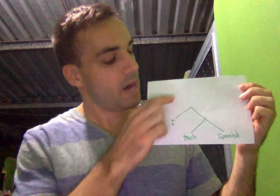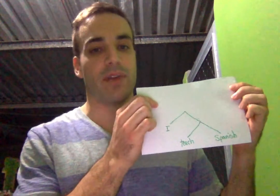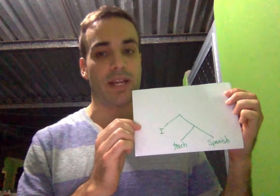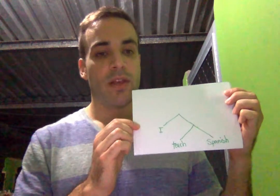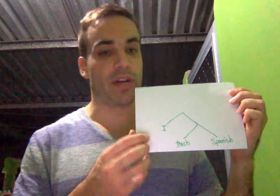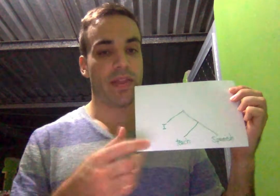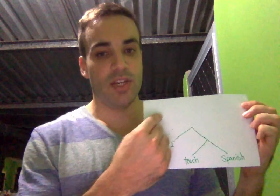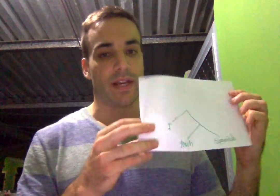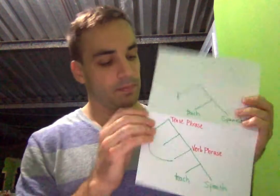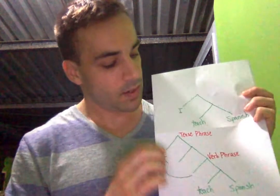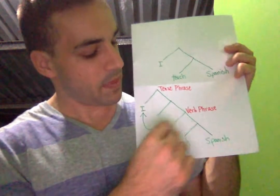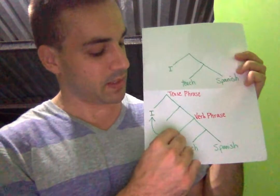But above the verb phrase, there's another phrase called a tense phrase. There's a feature in English that attracts the subject into the tense phrase. So you have the verb phrase, and then our subject...